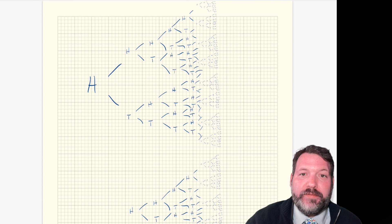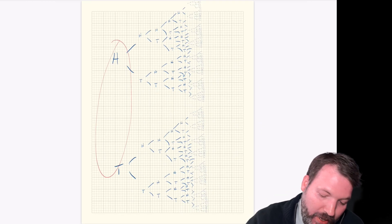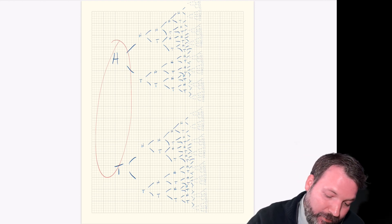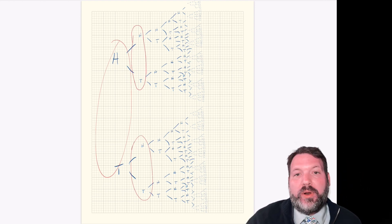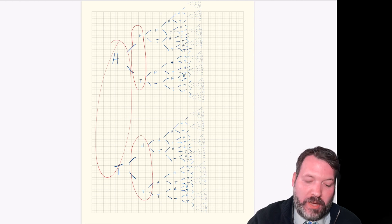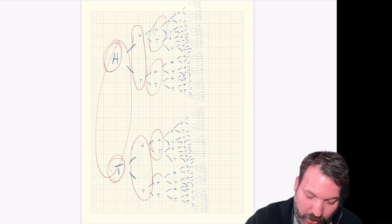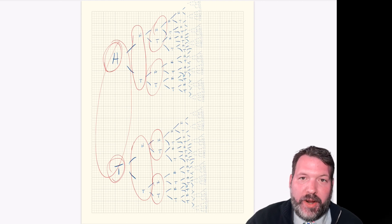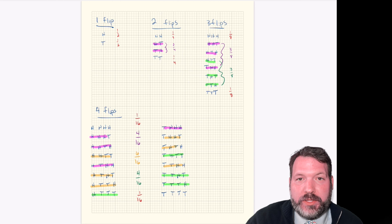So we typically build something like this tree branch diagram — a way to think through what happens after one flip, two flips, three flips, and so on. One flip: we get heads or tails. The second flip also gives heads or tails, but already accounts for the result of the first flip. We do the same with the third set of flips and on from there. What we build with this tree branch diagram is the full set of outcomes for a given number of flips.